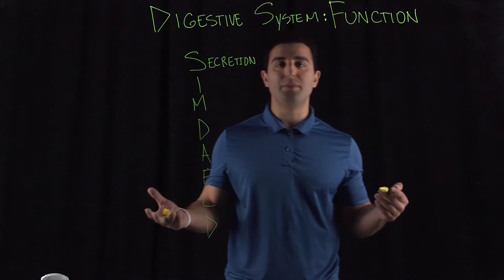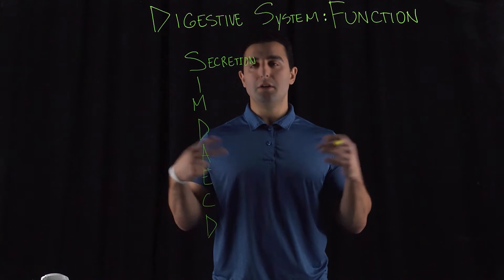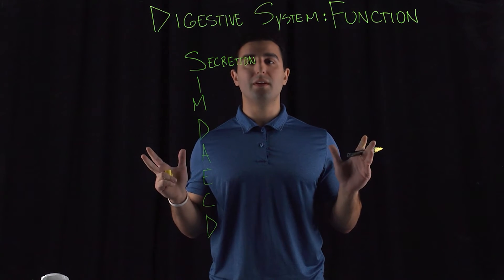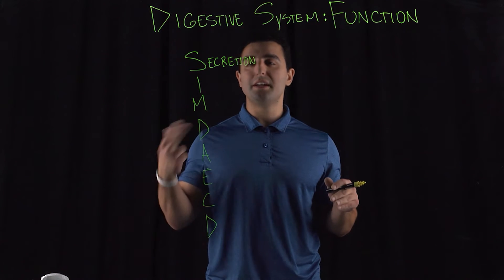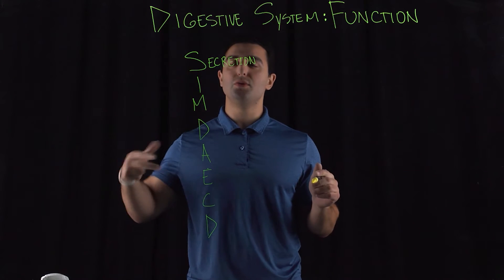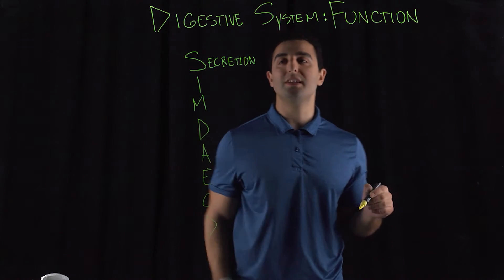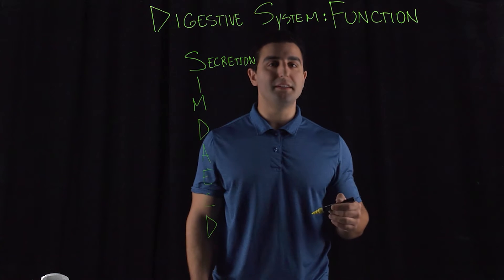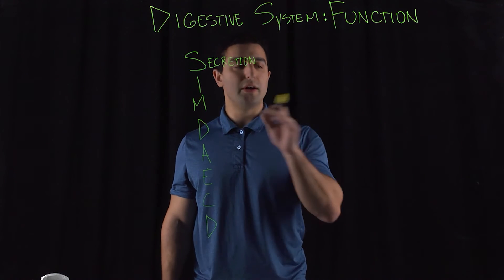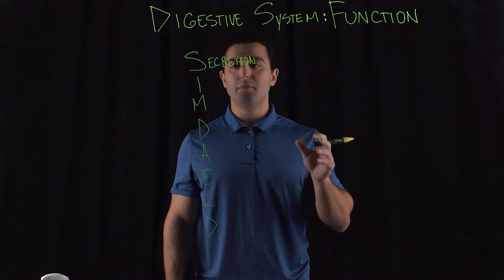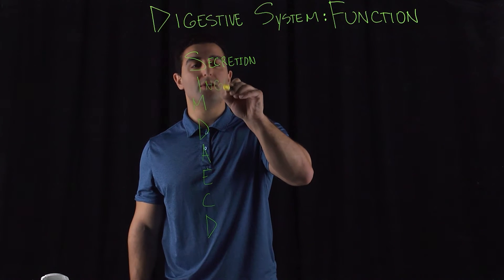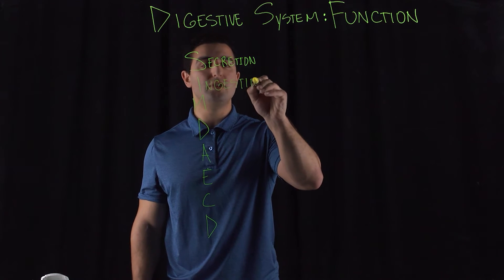The best way to understand the function of the digestive system is to think about exactly what it's doing. First things first, you get hungry — I'm hungry, I want a taco. So I'm thinking about a taco, and all of my salivary glands become activated to secrete saliva, so I have a lot of secretions taking place. I grab the taco, put it in my mouth, and I begin ingestion.